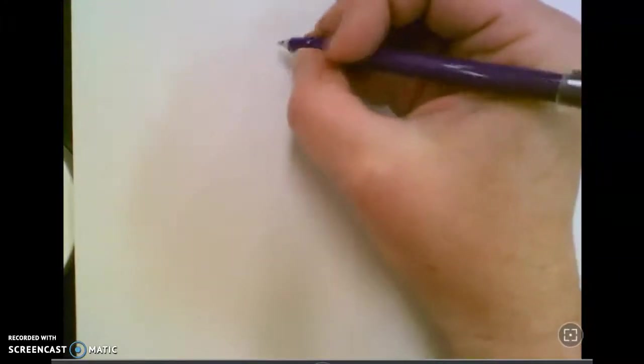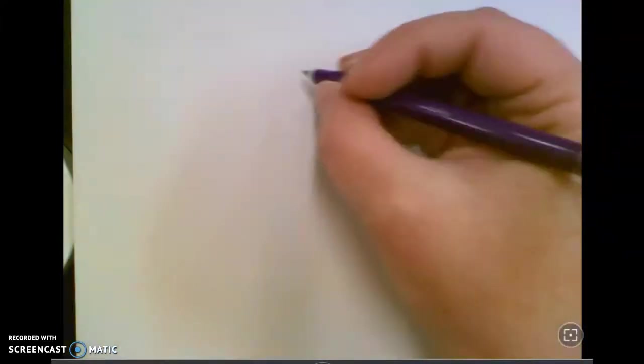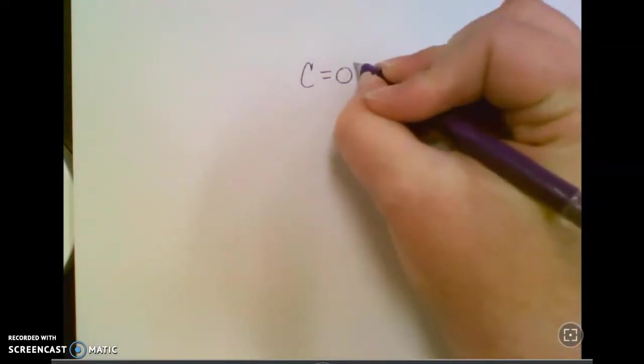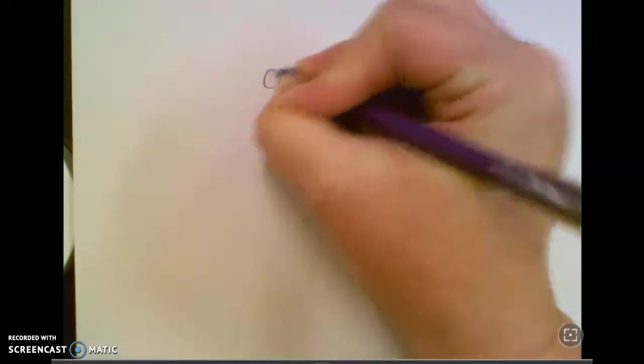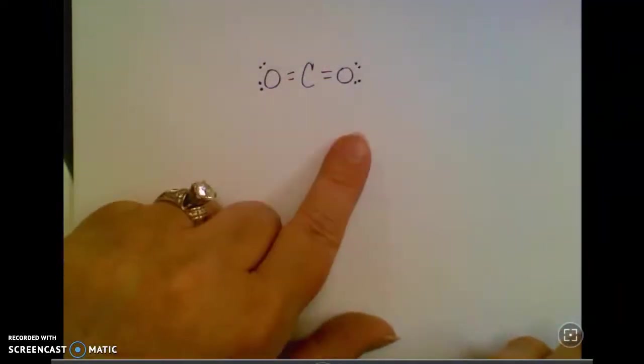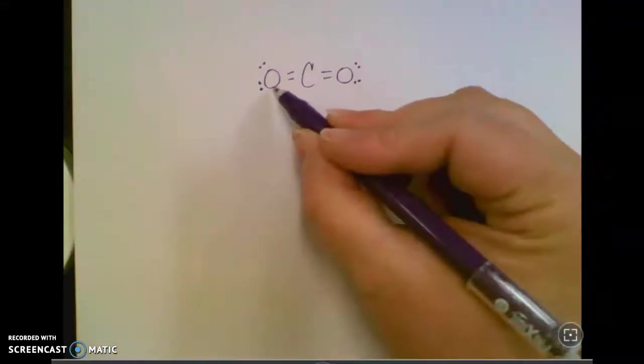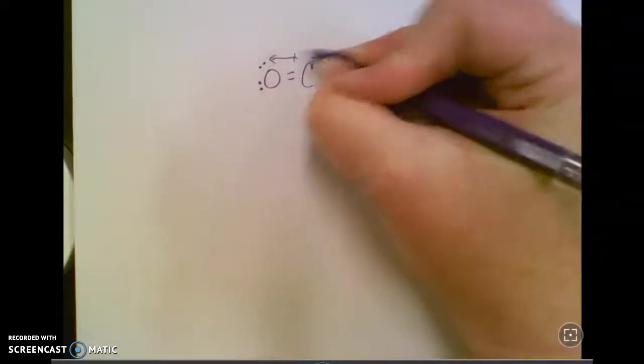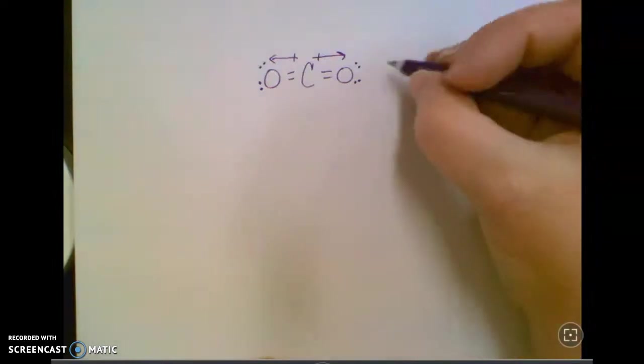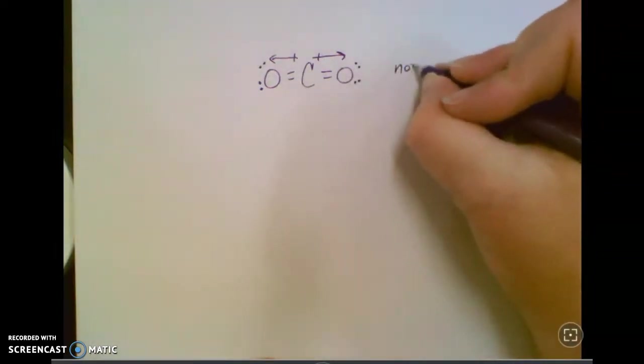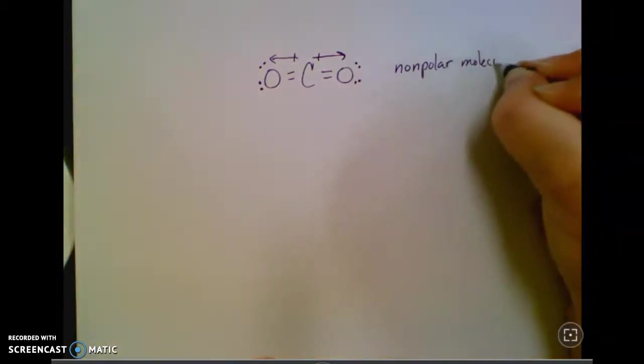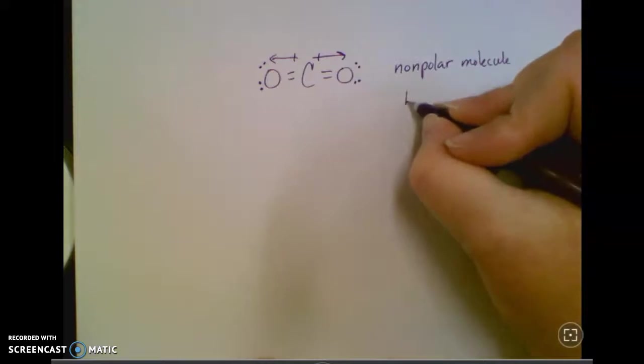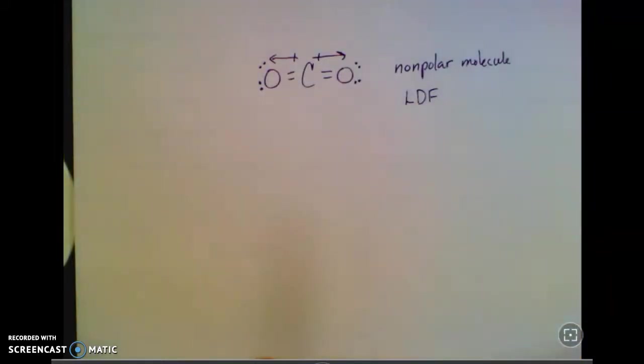What I'm asking you to do on your work for today, page 19 in your packet, is look at some Lewis structures. These aren't necessarily the ones you'll see there, but things we've done before, like carbon dioxide. If I look at that structure, I can see it's a linear molecule with two electron domains. They are polar bonds, oxygens pulling electrons toward themselves, but they cancel each other out. So I would say this is a non-polar molecule, and as such, it's only going to have London dispersion forces for its intermolecular forces.